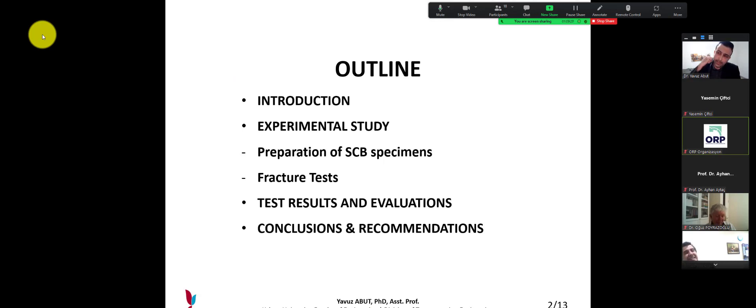Here is my outline. There are four parts. First, I will give some information about my paper in the introduction section, and the experimental study will be presented. Afterwards, preparation of SCB specimens and fracture tests will be given. Later, test results and evaluation will be discussed. And the last part, conclusions and recommendations.